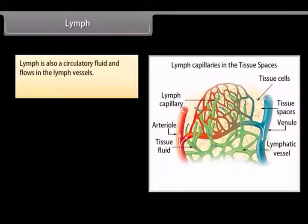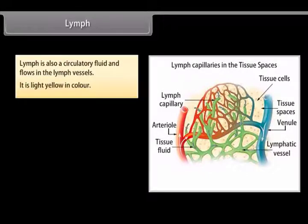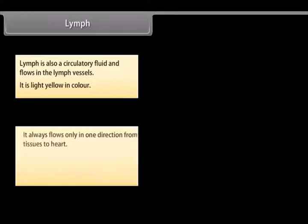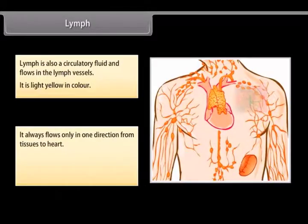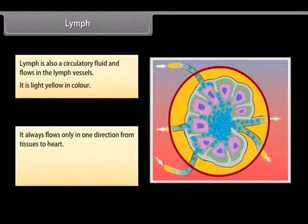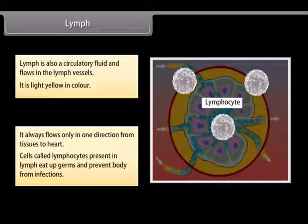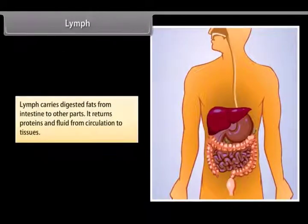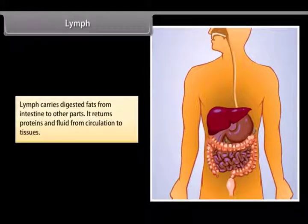Lymph is also a circulatory fluid that flows in the lymph vessels. It is light yellow in color and always flows in one direction, from tissues to the heart. Lymphocytes present in lymph engulf germs and prevent the body from infections. Lymph also carries digested fats from the intestine to other parts and returns proteins and fluid from circulation to tissues.